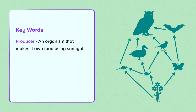Keywords: Producer — an organism that makes its own food using sunlight. Consumer — an organism that eats other organisms. Predator — an animal that hunts other animals for food.